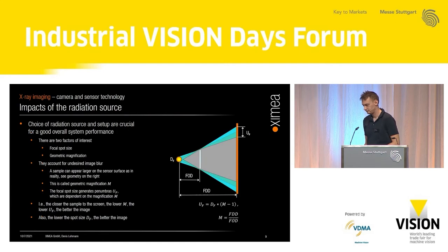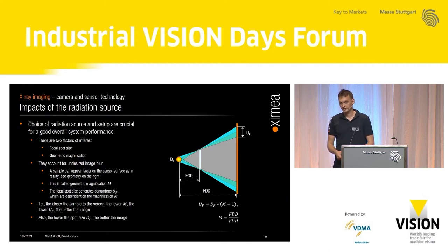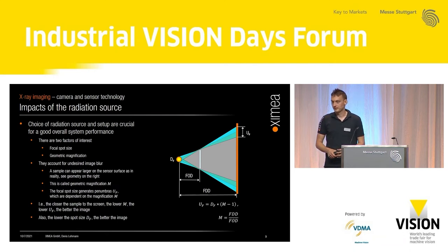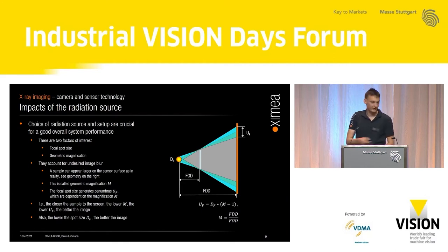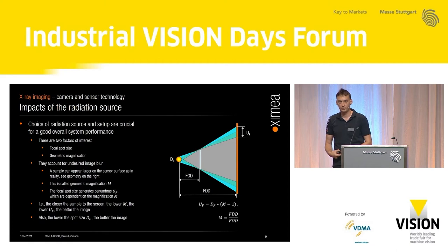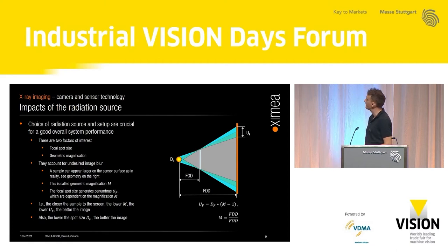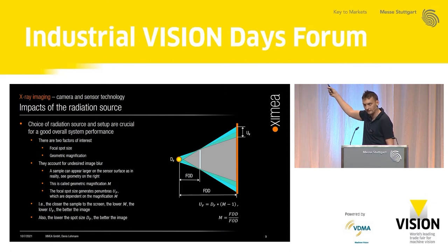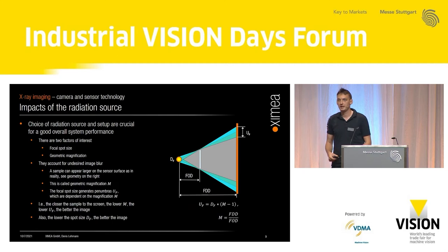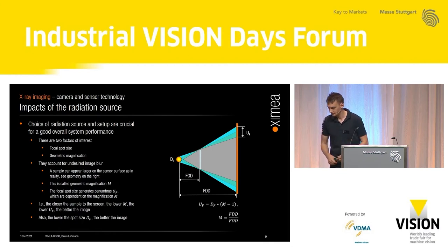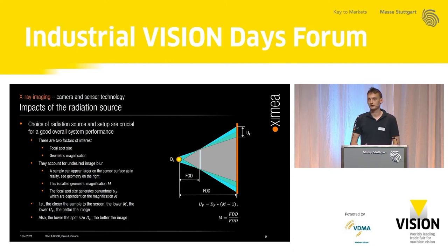Let's start with the radiation source. It has two factors of interest: the focus spot size and the geometric magnification — both of which account for undesired image blur. The closer you move your object to the screen, the less blur you have, because the lower the magnification, the lower the blur effect, as shown in the formula. Also, if the spot size is smaller, the blur effect becomes smaller. In a nutshell: the smaller the spot size and the closer your object to the screen, the better your image.